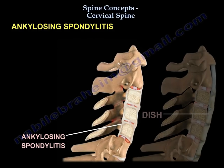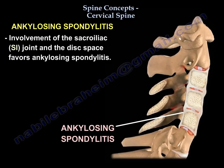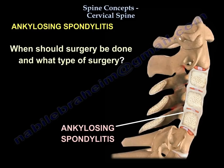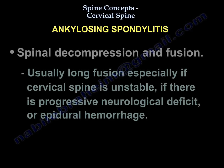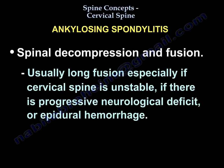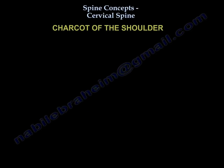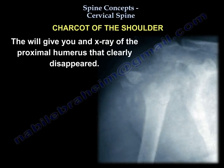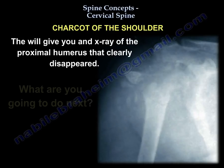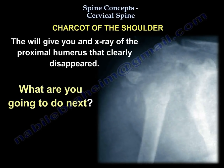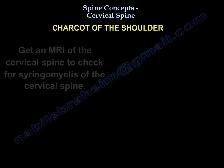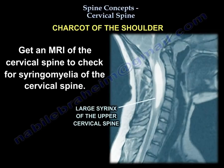You must know the difference between ankylosing spondylitis and DISH — involvement of the sacroiliac joint and disc space favors ankylosing spondylitis. Surgery involves spinal decompression and fusion, usually long fusion, especially if the spine is unstable, there is progressive neurological deficit, or epidural hemorrhage. Charcot shoulder: they will show you an x-ray of the proximal humerus that is clearly destroyed — you should get an MRI of the c-spine because the patient may have syringomyelia of the cervical spine.